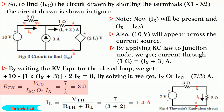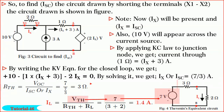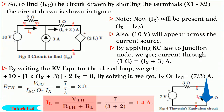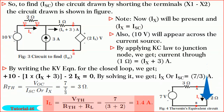So R-Thevenin equals V-OC divided by ISC. By substituting the values, we get R-Thevenin equal to 3 ohm. Now, by using V-Thevenin and R-Thevenin, the equivalent circuit drawn across the load resistance of 2 ohm is shown in the figure. So IL equals V-Thevenin divided by R-Thevenin plus RL. By substituting the values, we get IL equal to 1.4 amperes. Is it not simple, friends?